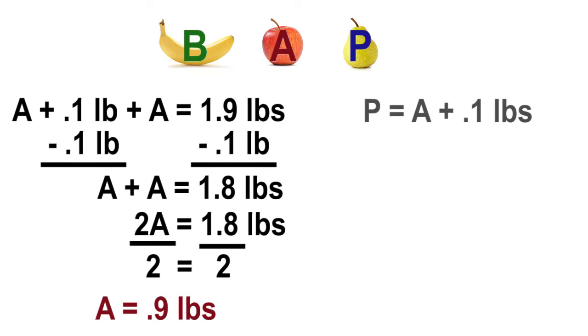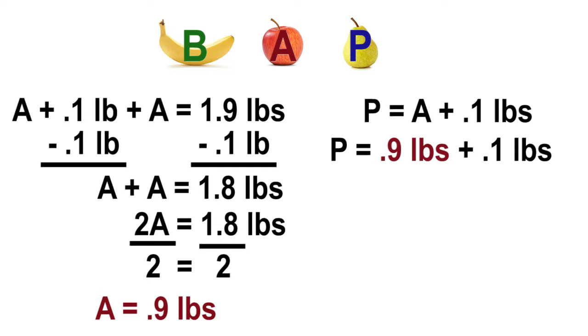Earlier, it was found that the pear is an apple plus one-tenth of a pound. This means that the pear is 9 tenths of a pound plus one-tenth of a pound, for a total weight of one pound.